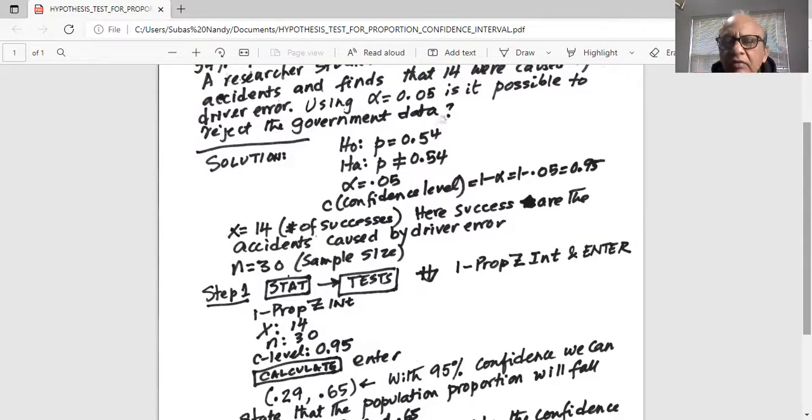C level is 0.95, confidence level because it's 1 minus level of significance. And we calculate.